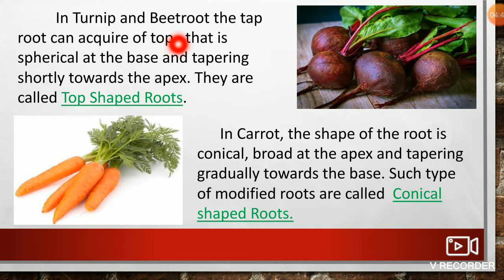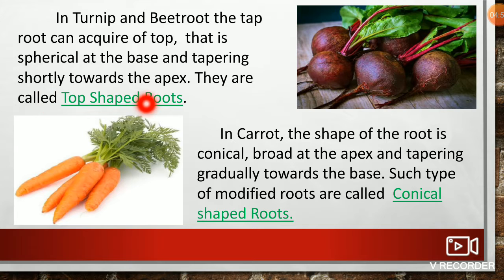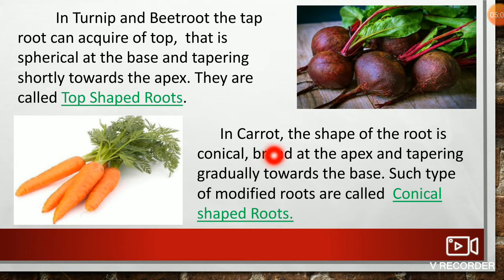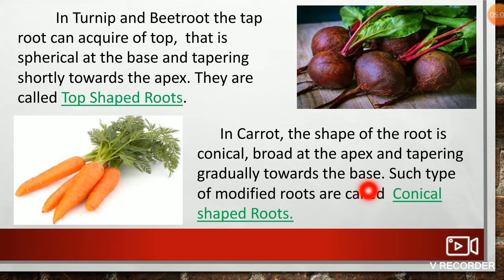In turnip and beetroot, the tap root acquires a top shape — spherical at the base and tapering gradually towards the apex and base. Such type of modified roots are called conical shaped roots.